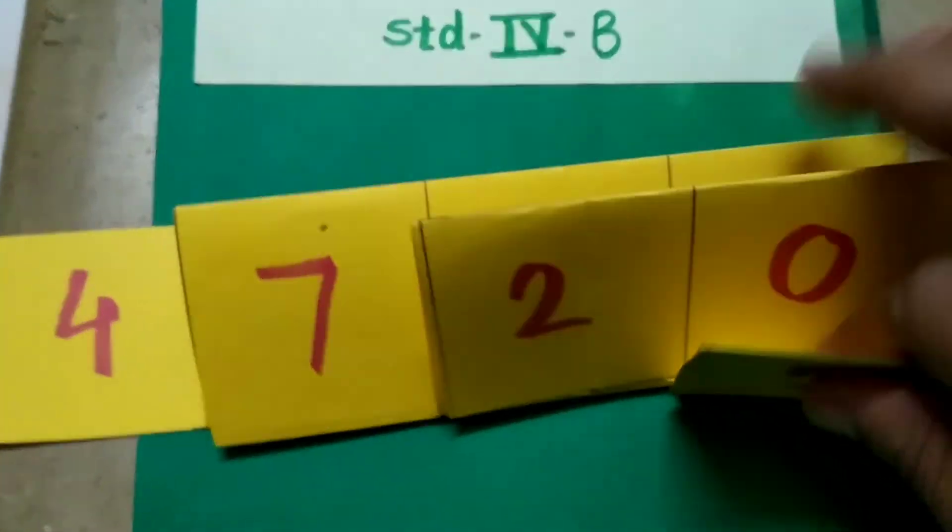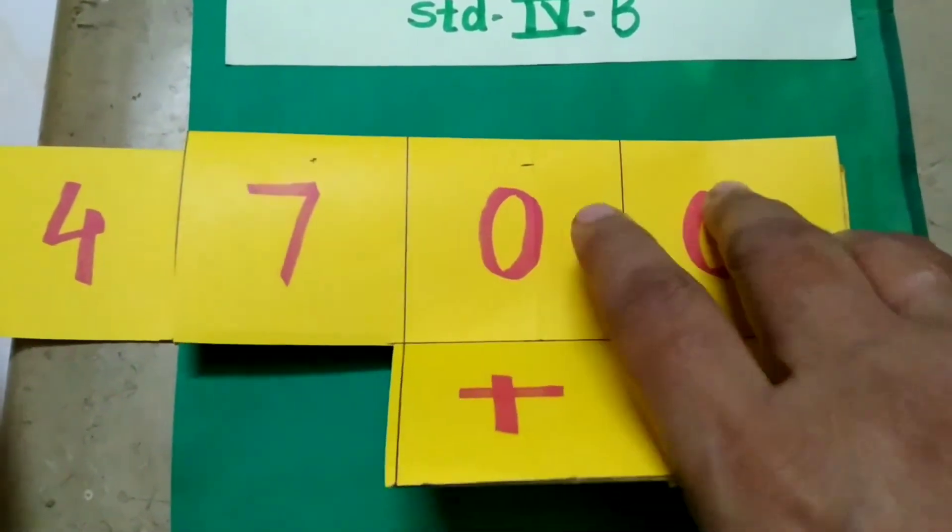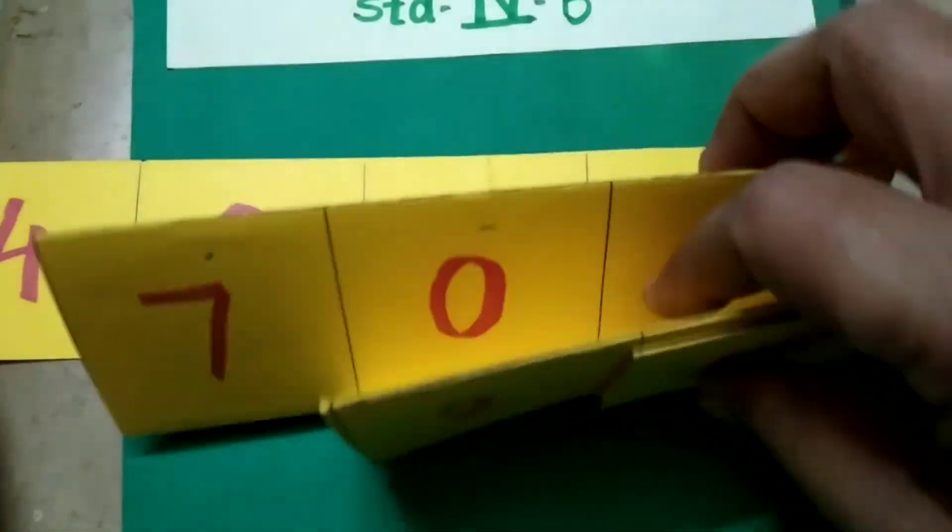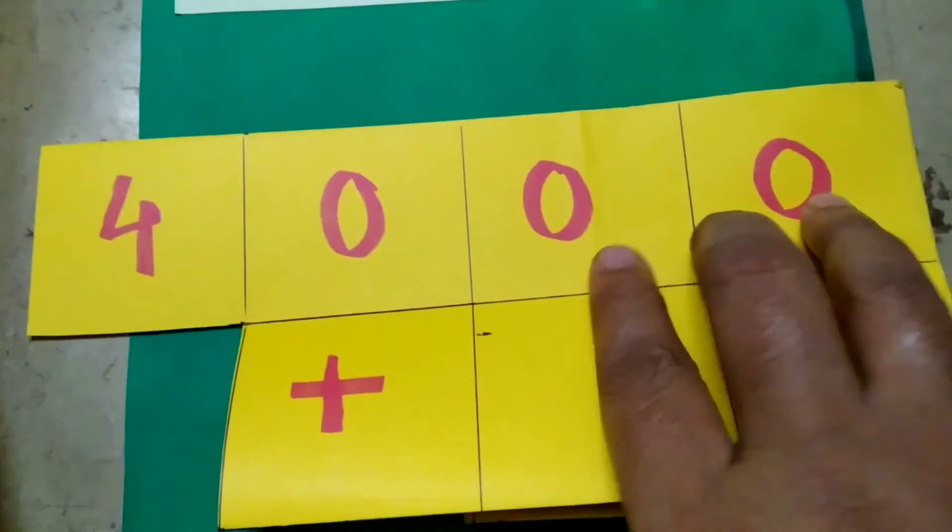Place value of 2 is 20. Then 7 is at 100th place, place value of this number is 700. And 4 is at 1000th place, so 4000.